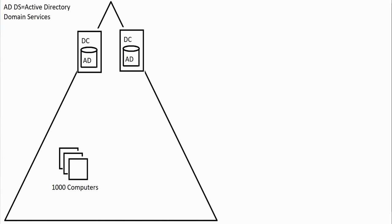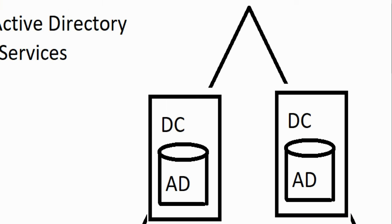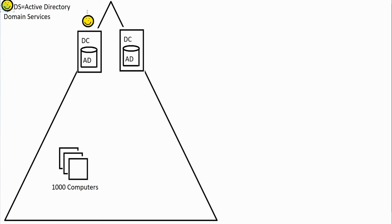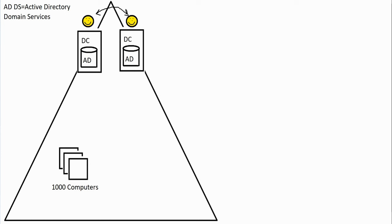Domain controllers replicate. So everything you do on one will replicate over to the other. If you create a user account on the first domain controller, replication will occur between both of them. That user could then log on to any one of the thousands of machines, and it's going to authenticate with a domain controller. The authentication protocol used is called Kerberos.